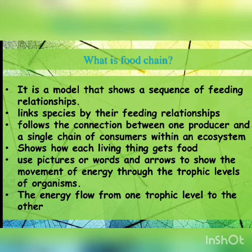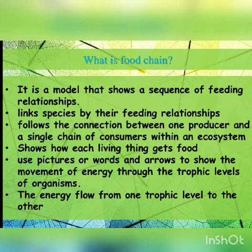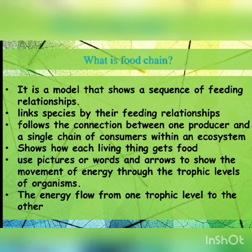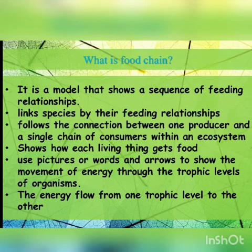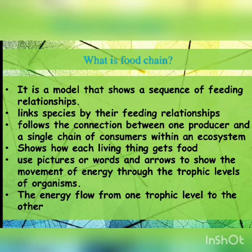The food chain follows the connection between one producer and a single chain of consumers within an ecosystem. It shows how each living organism gets its food and from where. Pictures, words, and arrows are used to show the movement of energy through the trophic levels of organisms.